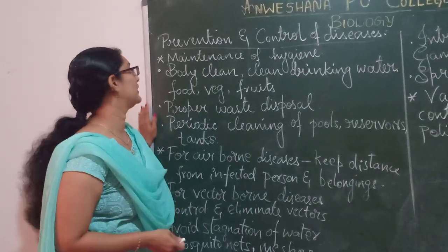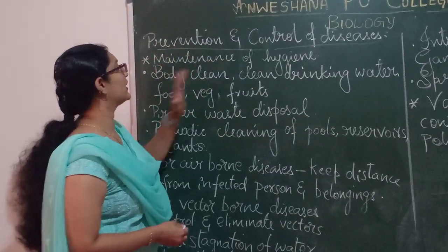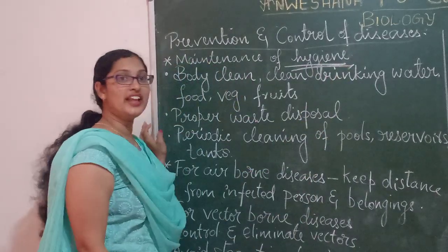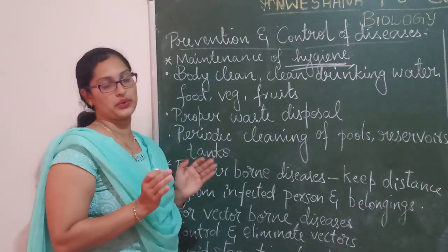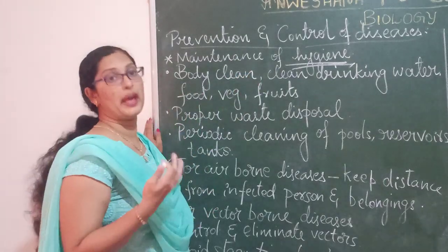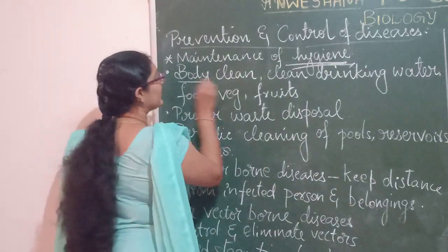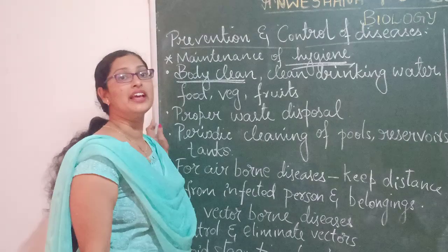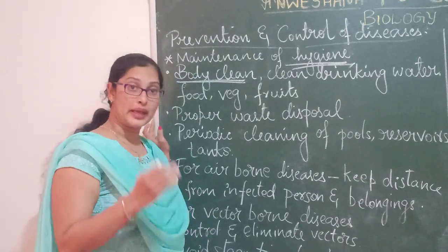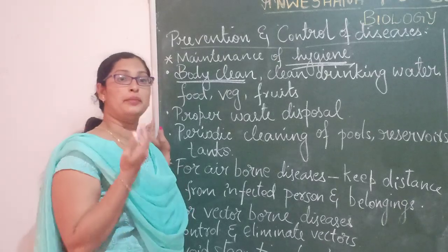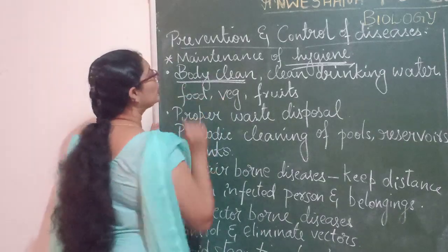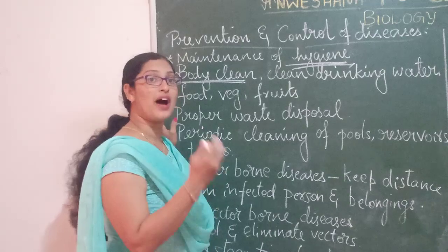So first one in the prevention and control of diseases is maintenance of hygiene. Hygiene means a very clean environment — a clean environment is called as hygienic environment. So what has to be kept clean? First, you will have to keep your body clean. Twice you will have to take bath, take bath regularly. Keep your teeth clean, keep your neatly trimmed nails. These are all the rules which are to be followed in order to keep ourselves far from diseases.